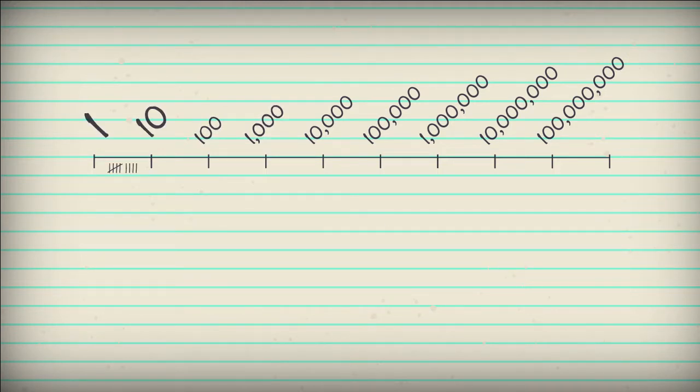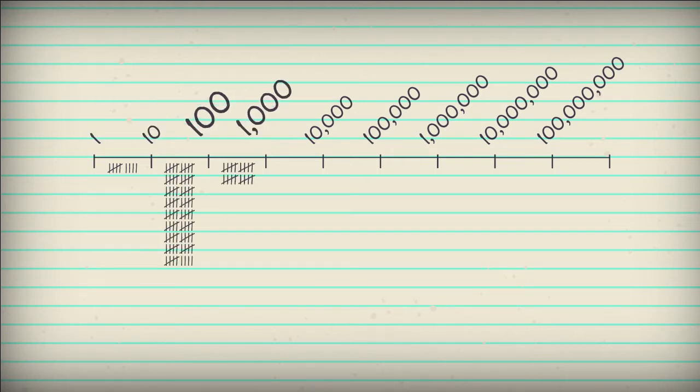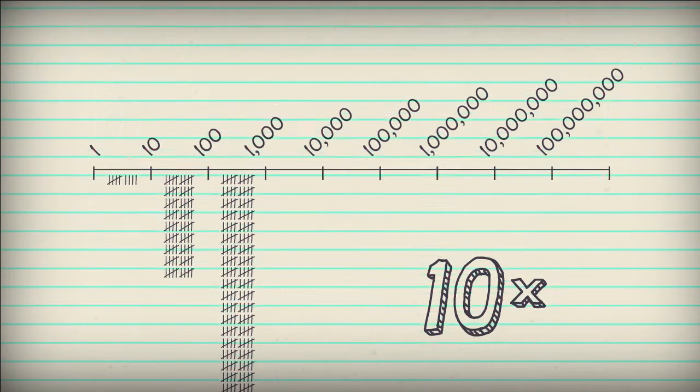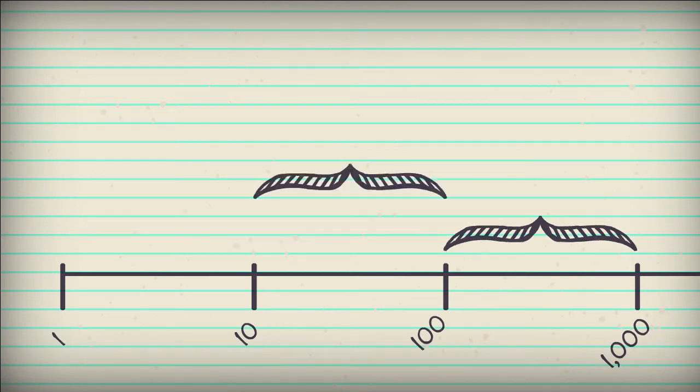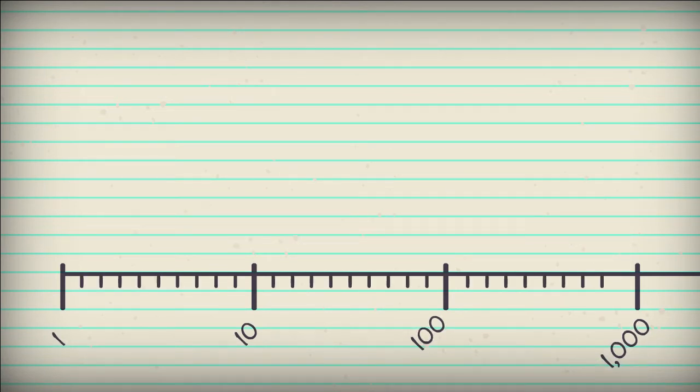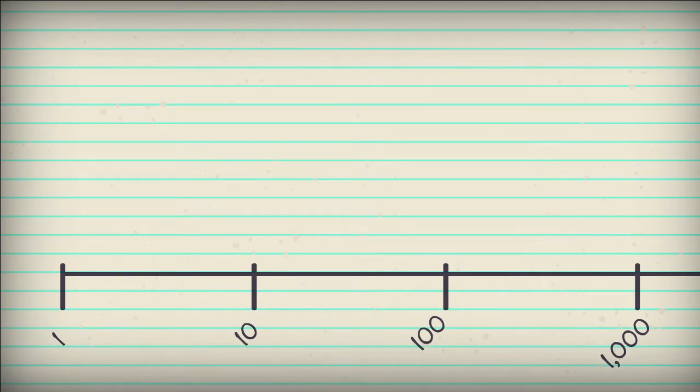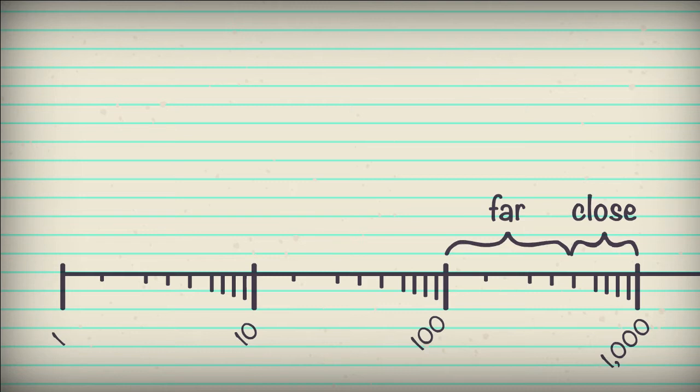You see, this group has a total of nine numbers, while this has 90 and this one has 900. Each group has ten times the last. Now let's take a look at this space. The numbers in here don't appear like they do in the linear scale. Instead, they start far apart and get closer together as they increase in value. This is how we visually compress all our data.